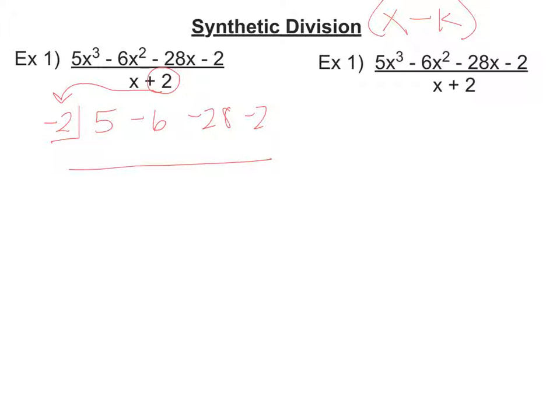Then you just do the same process over and over again. So for synthetic division, you bring down the first number, which is a 5, because you have to have something to multiply. So you multiply here the negative 2 times 5, and that's the number you put in here to be a negative 10. Then you add. So then I have negative 6 plus a negative 10 is going to be a negative 16, and you do it all over again.